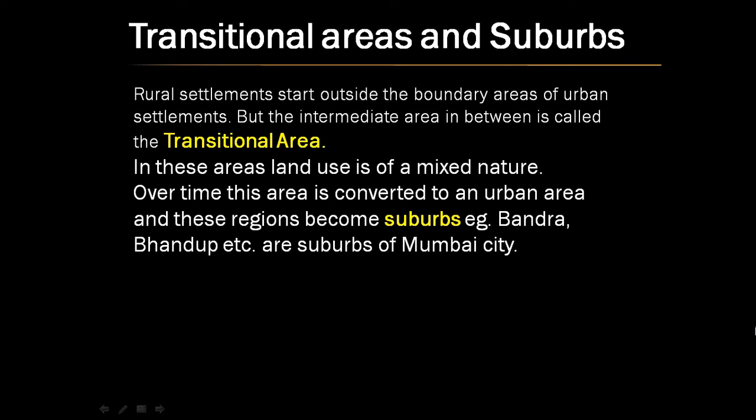Now let us know about transitional areas and suburbs. Rural settlements start outside the boundary areas of urban settlements. The intermediate area in between is called the transitional area. In these areas, land is of a mixed nature. Over time, this area is converted to an urban area and these regions become suburbs. For example, Bandra and Pandra are suburbs of Mumbai city.